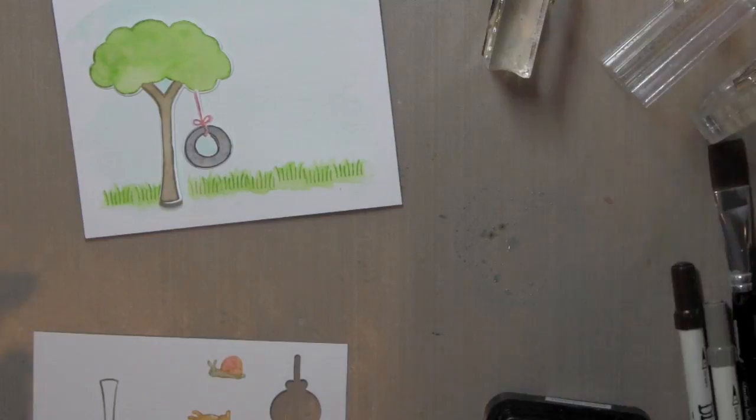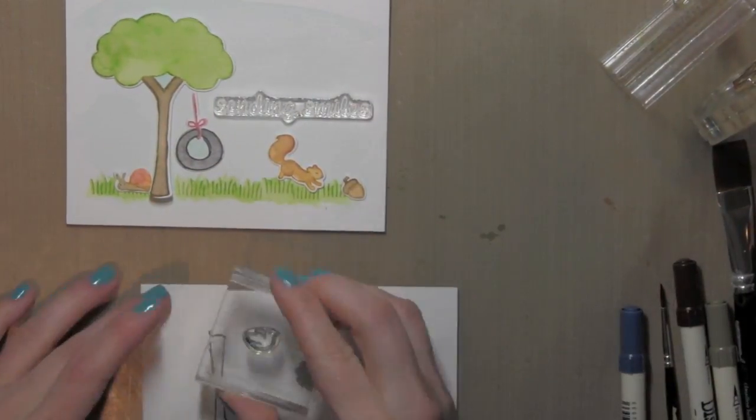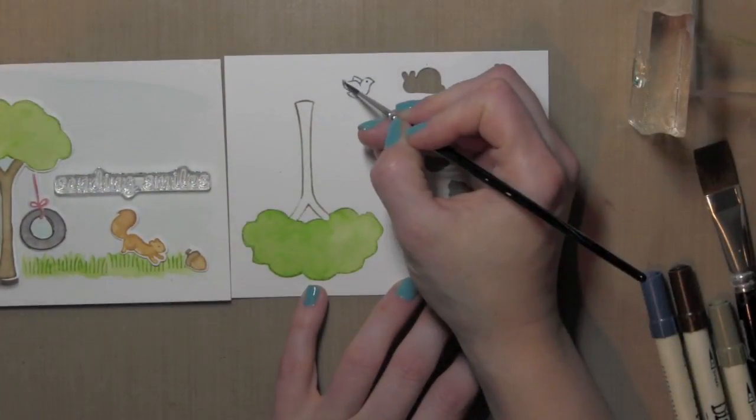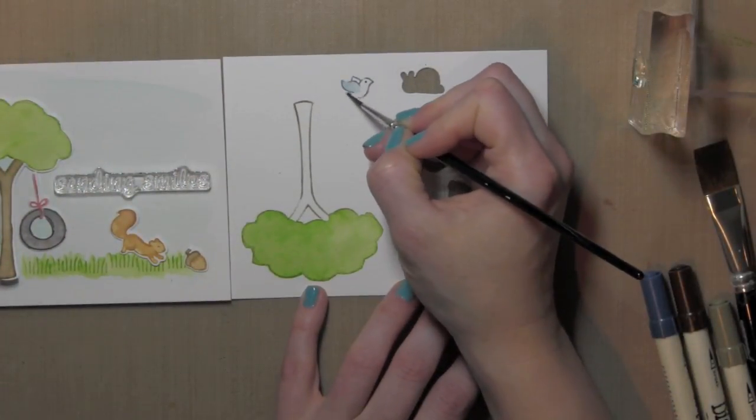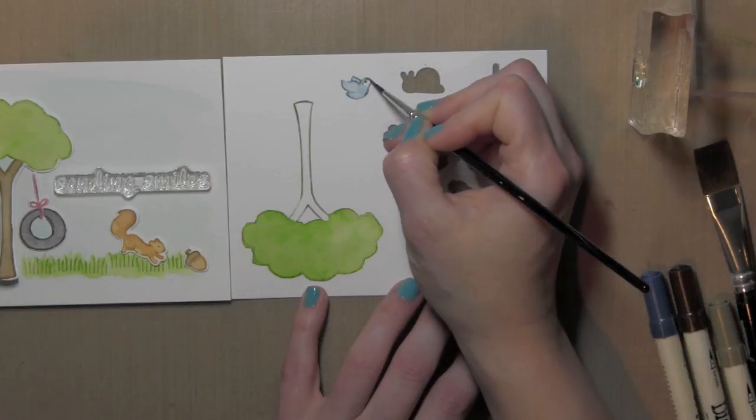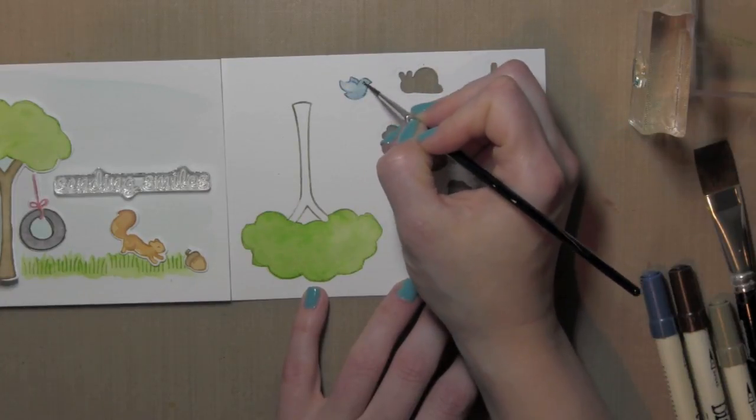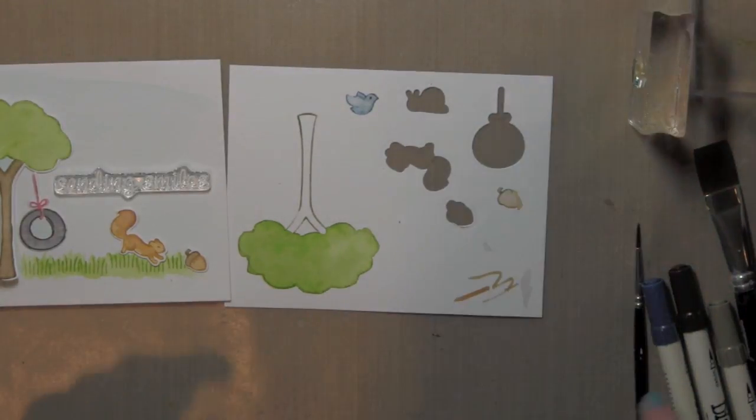And I went ahead and didn't stamp it there behind my tree because I didn't need to do that since I'm going to place my tree trunk there. And the inside of the tire swing does not die cut out, so I did take a little tumbled glass and watercolor the center of the tire so that it looks like you can see through it to the background of the card. A little faded jeans on the bird, so I can color him in, added a little black for the eye.